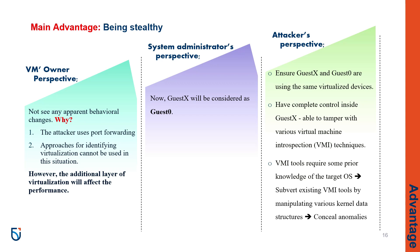We can consider the stealthy feature from different perspectives. First, the VM's owner does not observe any obvious behavior change because port forwarding is used by the attacker, and we cannot use the technique of detecting virtualization here. But the additional layer of virtualization will affect performance. From the system admin's perspective, guest X is now considered as guest 0. About attackers: attackers can ensure that guest X and guest 0 are using the same virtualized devices. With complete control inside guest X, the attacker has sufficient power to tamper with various virtual machine introspection techniques. When attackers control the guest kernel by manipulating various kernel data structures, they can subvert existing VMI tools. The consequence is that the attacker will be able to hide their activities in a guest operating system.